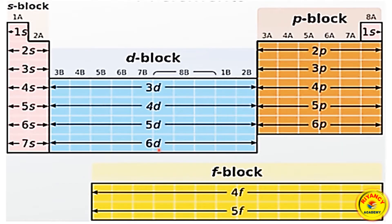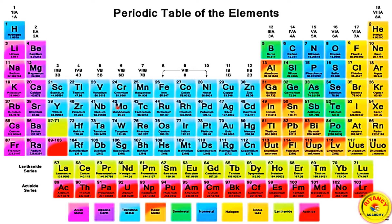This is a skeleton of the periodic table. These are the D-block elements shown in blue color — 3D, 4D, 5D, 6D. This is the D-block elements section.